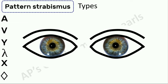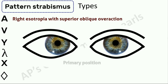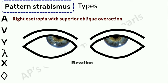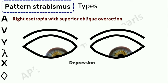Now let's see a case of right esotropia with superior oblique overaction. Pay close attention to the right eye. This would be midline upgaze, and in midline downgaze you can see the relative divergence of the right eye due to superior oblique overaction. The difference from upgaze to downgaze should be at least 10 prism diopters to be considered significant for an A pattern strabismus.